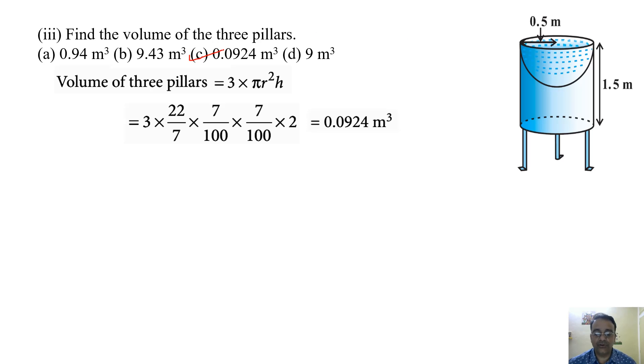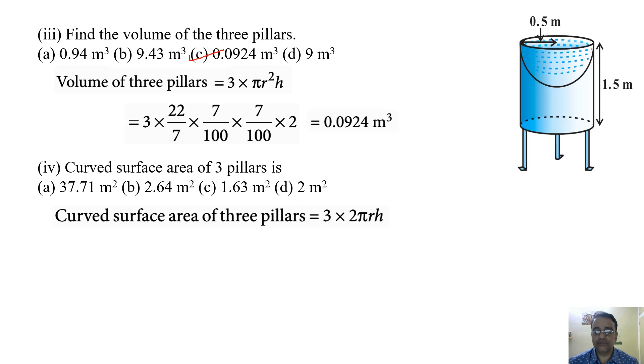Now we are moving toward the fourth question. Curved surface area of three pillars. And the curved surface area of one pillar is 2πrh, so three pillars, 3 × 2πrh. Now we will substitute the value of π, 22 by 7, r is 7 by 100, and h is 2.